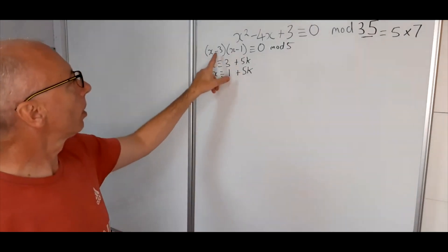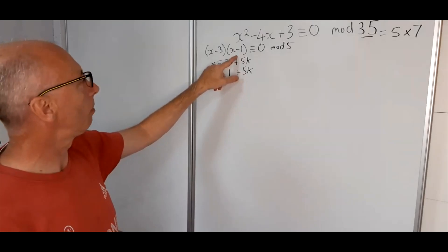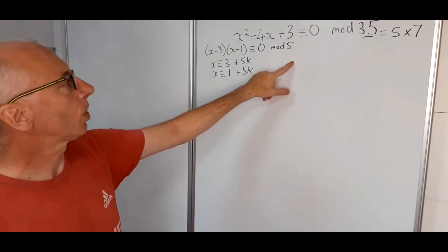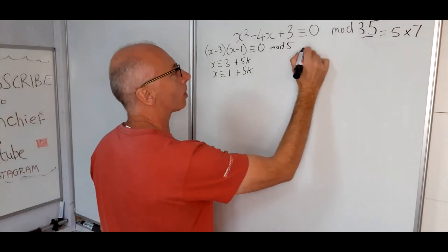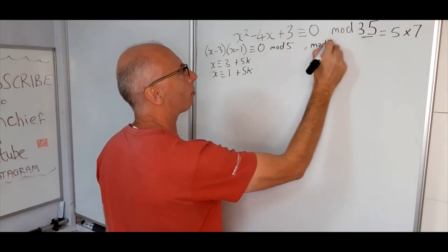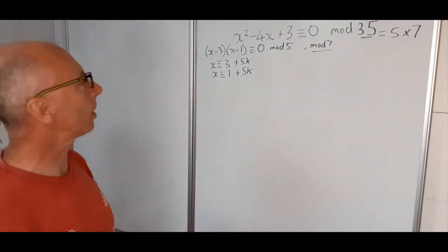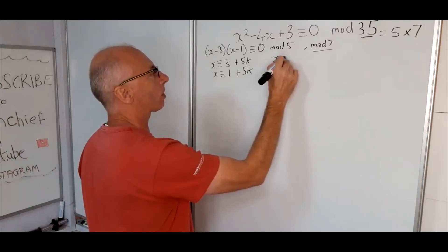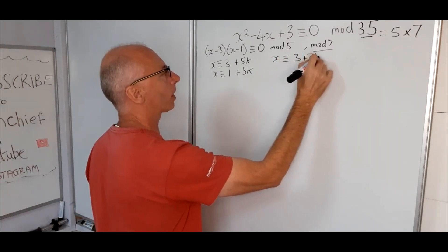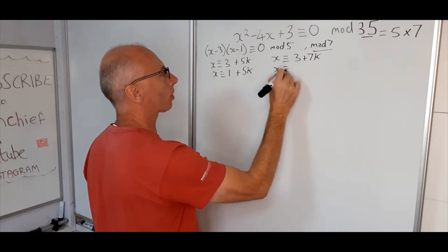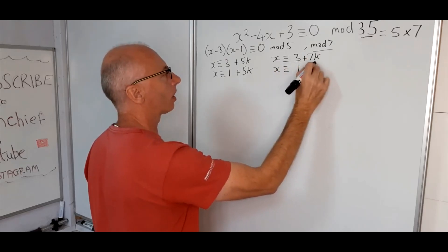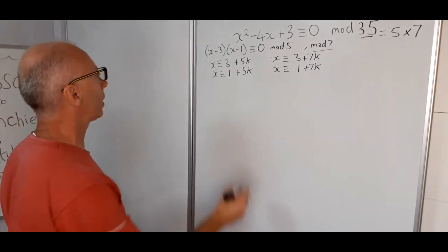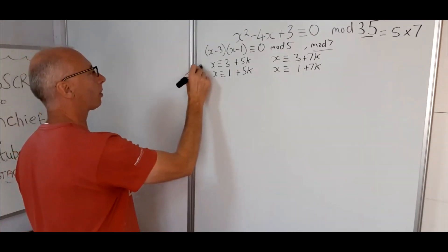Now as it happens the solutions from the factorization are all below 5 and 7 so we'll have a very similar solution here for modulo 7 as well. So for the modulo 7, we can also get that x is congruent to 3 plus 7k and x is also congruent to 1 plus 7k. Okay, so that's our initial calculations, stage 1.